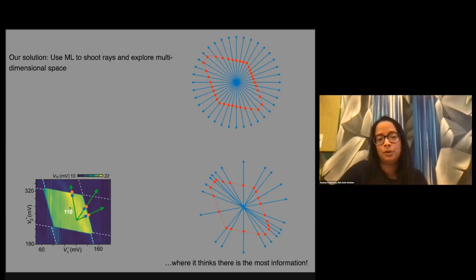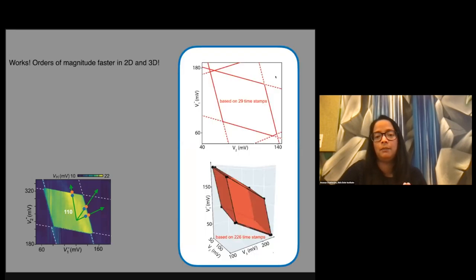And so we were shooting out rays instead of measuring a 2D diagram like this. And indeed, the ML was able to cluster these rays in areas where it thought there was more information. And by doing this, we were able to measure orders of magnitude faster in 2D and 3D, what the charge landscape looks like for our multi-qubit array. So that was really a big improvement. For this measurement, we went from three days to 12 minutes, for instance.